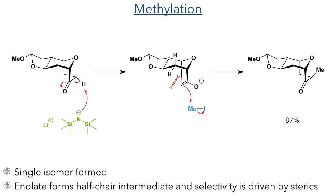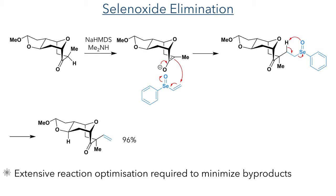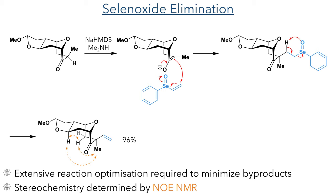In the next reaction, this position was once again deprotonated using sodium-HMDS. This generated an enolate which added to phenyl-vinyl selene oxide. This selene oxide species can abstract a proton to produce an alkene upon the elimination of a selenoperoxal species. This product was produced in a 96% yield and the stereochemistry was determined using NOE-NMR.